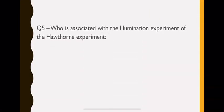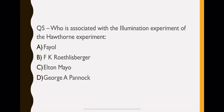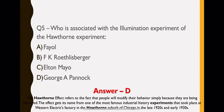Who is associated with the illumination experiment of the Hawthorne experiment? If you remember, you must have studied that in management. Who initiated this? This was initiated by George A. Pennock. I want to tell you about the Hawthorne effect. It refers to the fact that people will modify their behavior simply because they are being observed. For example, if you're working in a company and your boss always observes you, definitely you are going to work very carefully. This experiment was done in Western Electric Factory in Chicago in the late 1920s and early 1930s. It was done by option D, George A. Pennock.